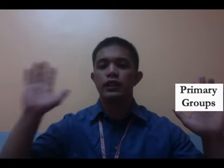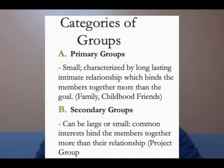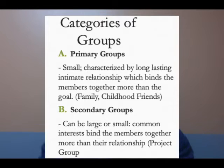Under categories of groups, we have primary groups and secondary groups. Primary groups are small groups characterized by intimate or very close relationships that bind the members together. Classic examples include family and close or childhood friends. Primary groups are tight-knit, and importantly, the relationship is longer lasting.